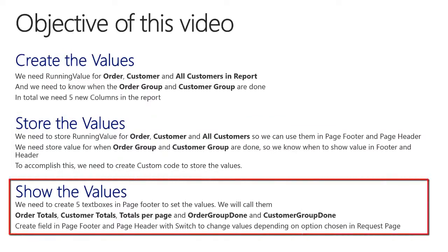For showing the values, we need to create five text boxes in PageFooter to set the values. We will call them order totals, customer code totals, totals per page, order group done, and customer group done. And finally, the most important part, we will create the TransFooter text box in the PageFooter and the TransHeader text box in the PageHeader. In both these text boxes, we will create a switch which changes values depending on the option chosen by the user in the request page.